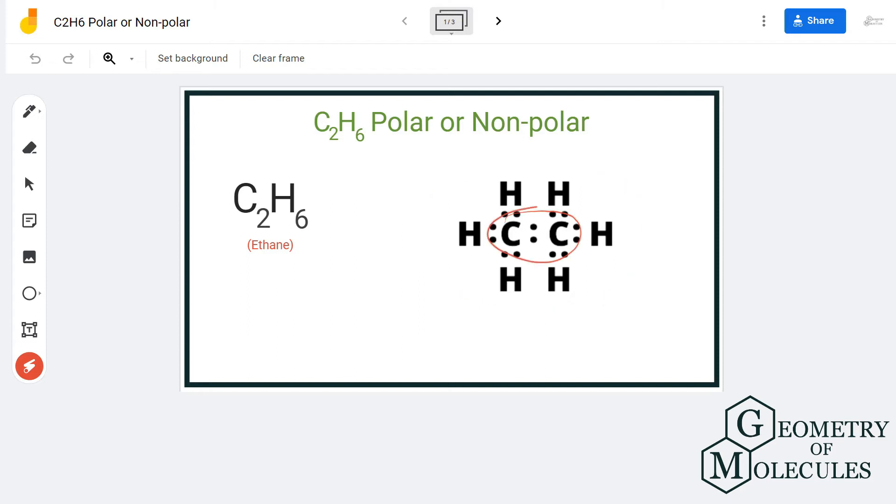By looking at the Lewis structure we can say that the distribution of hydrogen atoms as well as electrons is quite symmetric. So there are chances that this molecule is a non-polar molecule, but to further confirm it we will look at its shape.